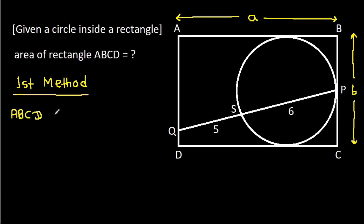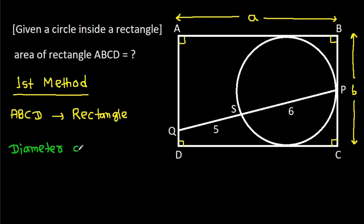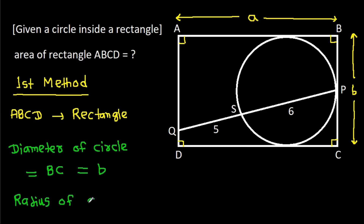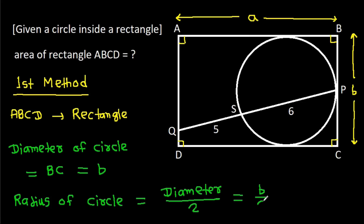ABCD is a rectangle, which means these angles will be 90 degrees. The diameter of the circle will be equal to BC, that is B. So the radius of the circle will be diameter over 2, that is B over 2.